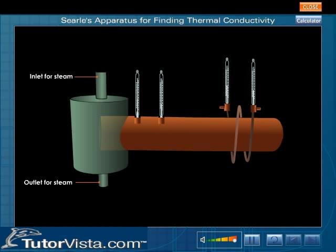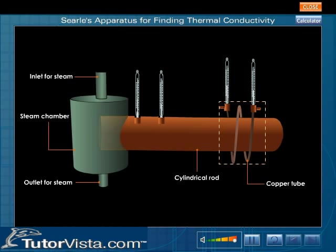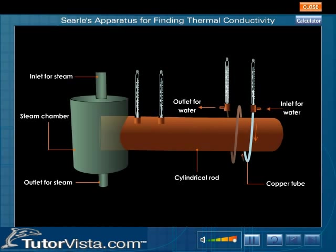One end of the cylindrical rod is placed in a steam chamber, and a copper tube is wound on the other end. Water is made to flow through this coiled copper tube.